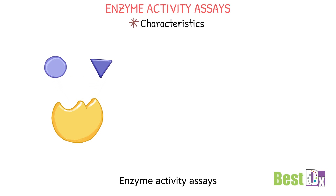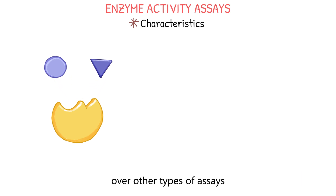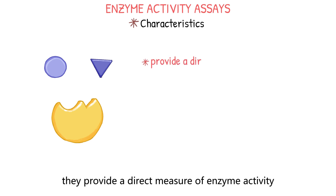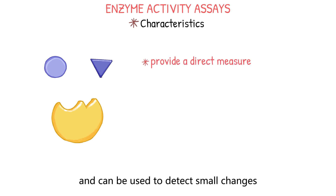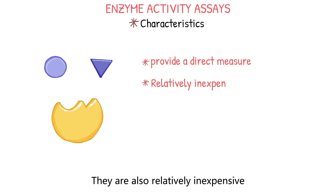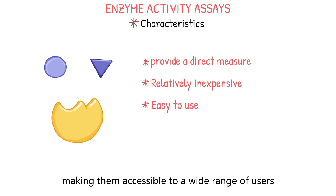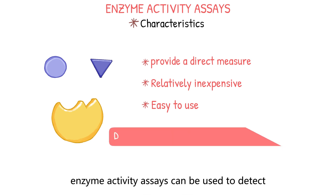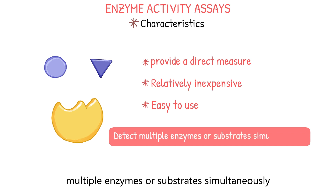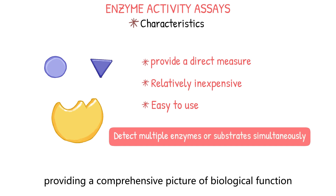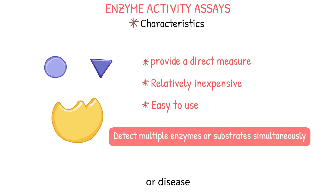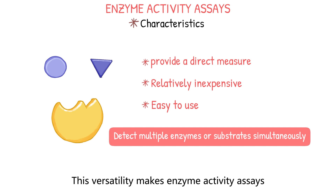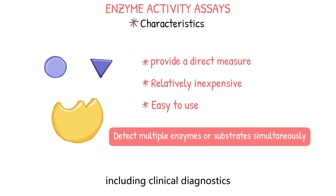Enzyme activity assays offer several advantages over other types of assays. For example, they provide a direct measure of enzyme activity and can be used to detect small changes in enzyme activity over time. They are also relatively inexpensive and easy to use, making them accessible to a wide range of users. In addition, enzyme activity assays can be used to detect multiple enzymes or substrates simultaneously, providing a comprehensive picture of biological function or disease. This versatility makes enzyme activity assays useful in a variety of applications including clinical diagnostics, drug discovery, and biotechnology.